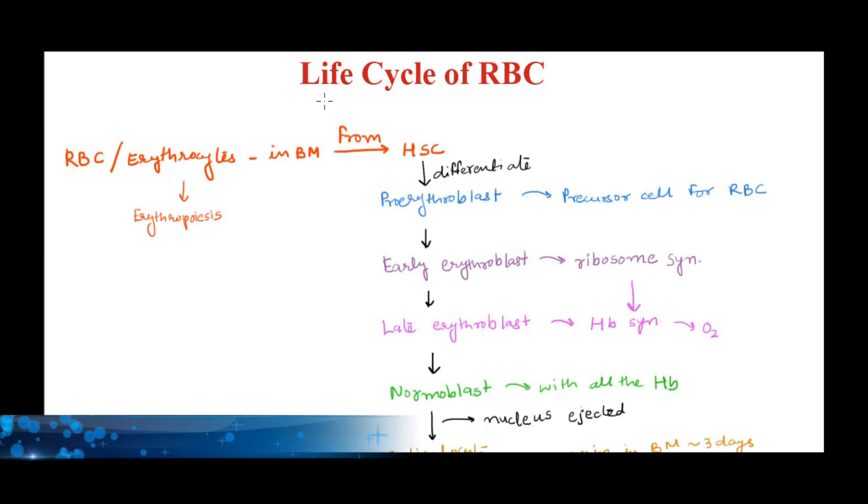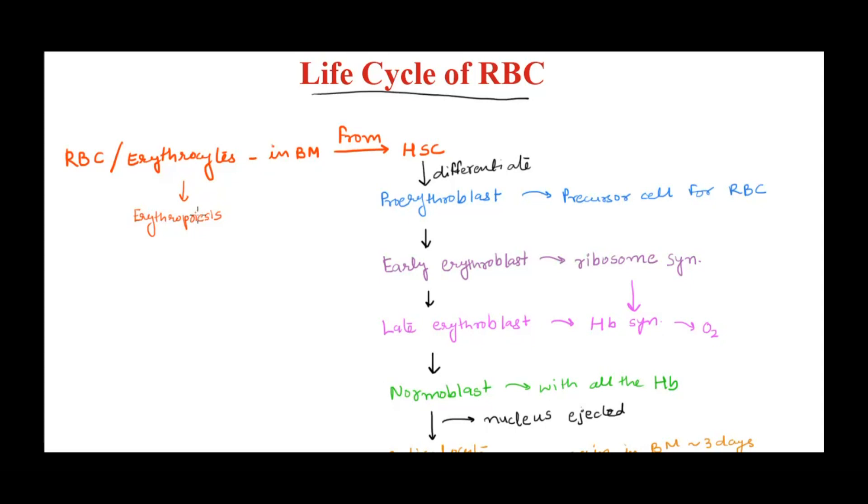Hey guys, welcome back. Today we're talking about the life cycle of RBC or erythrocyte. We'll see the formation and destruction of RBC. The process of formation of RBC or erythrocyte is called erythropoiesis - erythro meaning red and poiesis meaning to form.